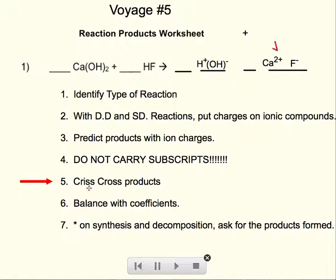Yes, and then when you're done, crisscross your products. Crisscross your products. So this 2 is here because calcium is 2 plus, and F is minus. So the 2 comes down.